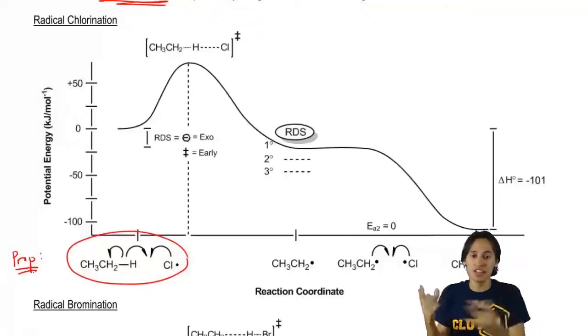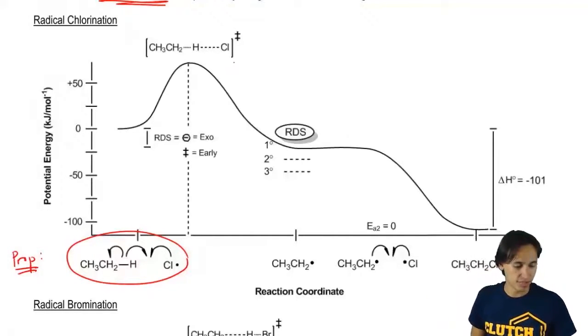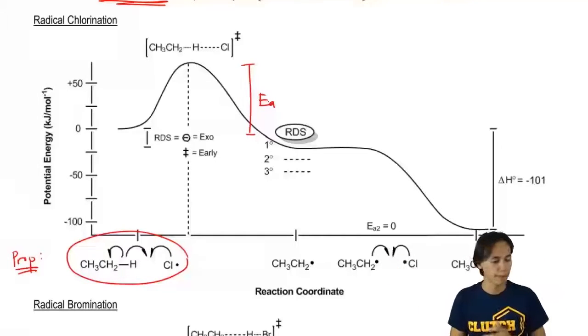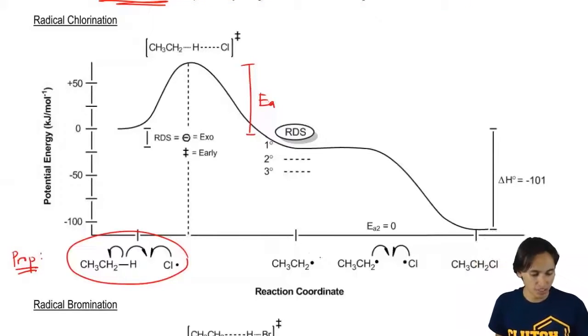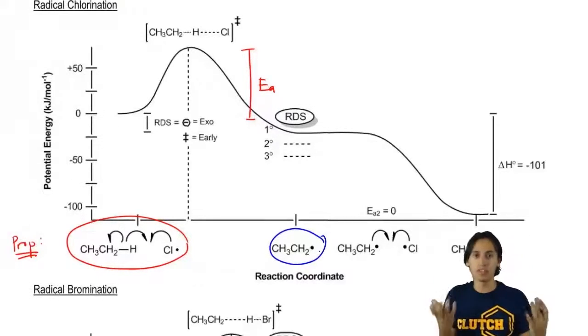We would expect that takes energy because you're breaking a bond. So that's going to be this activation energy here. That's the activation energy required to do that first step. Then what that's going to make is an intermediate that looks like that. That's a radical. That's my intermediate.